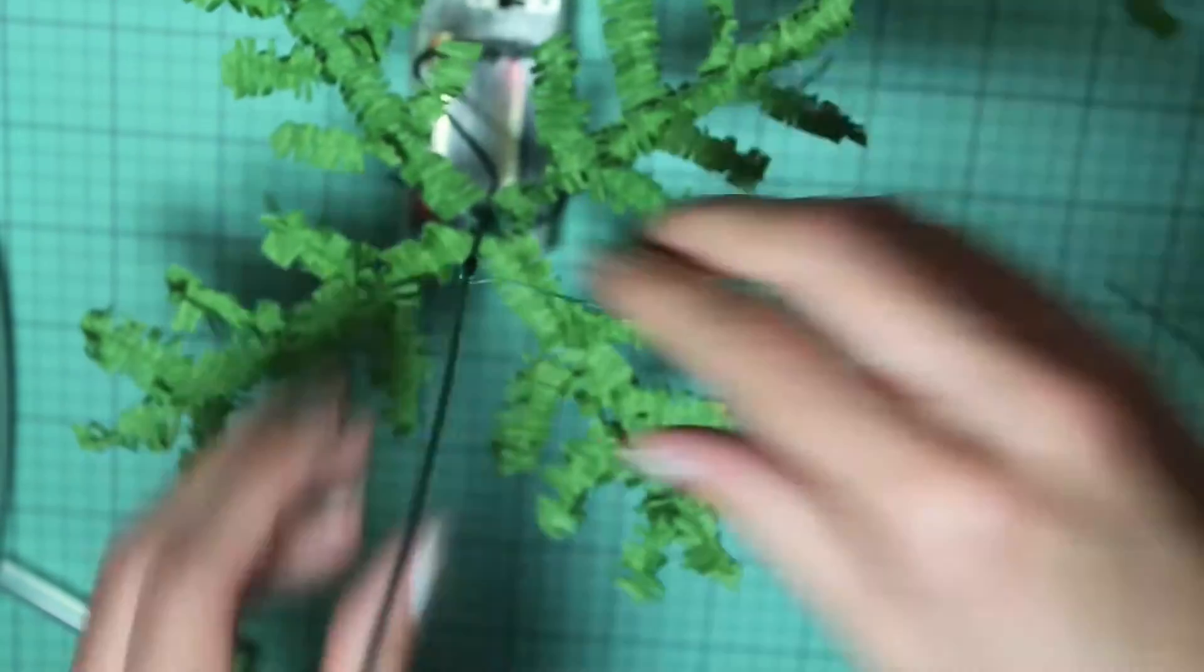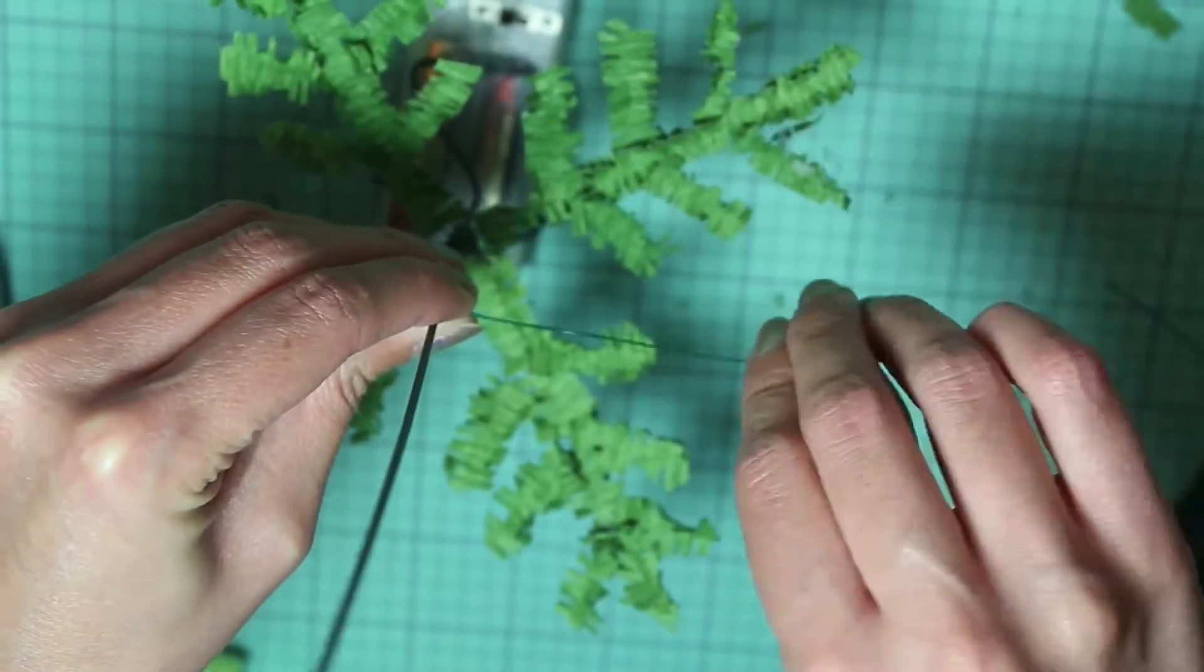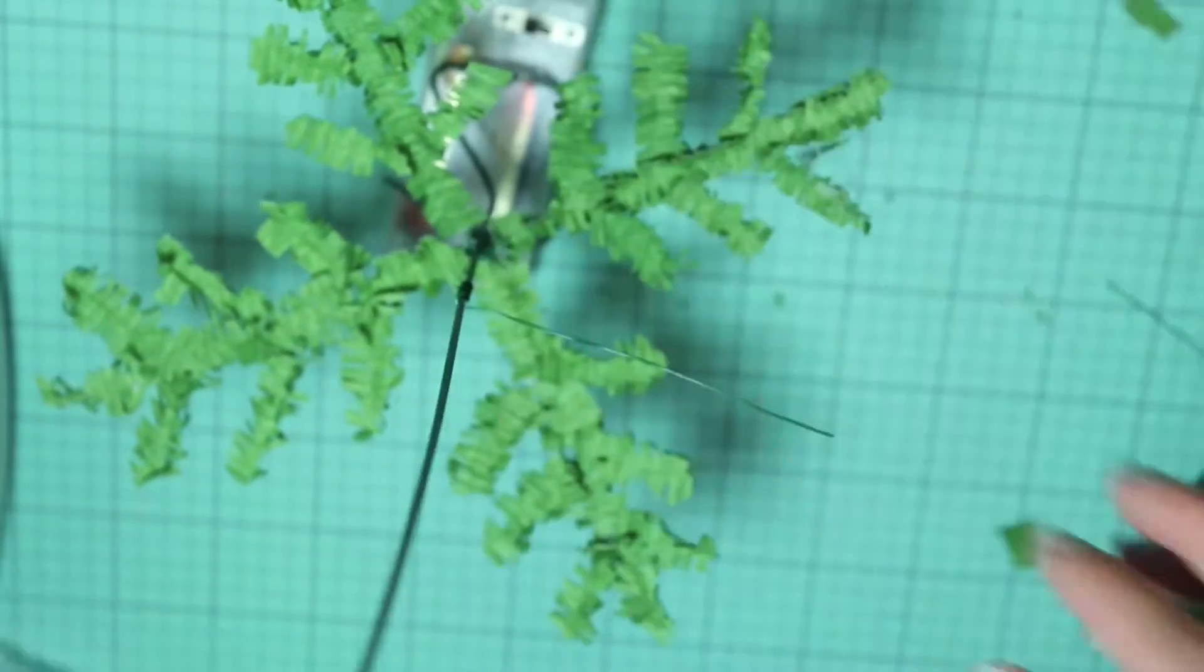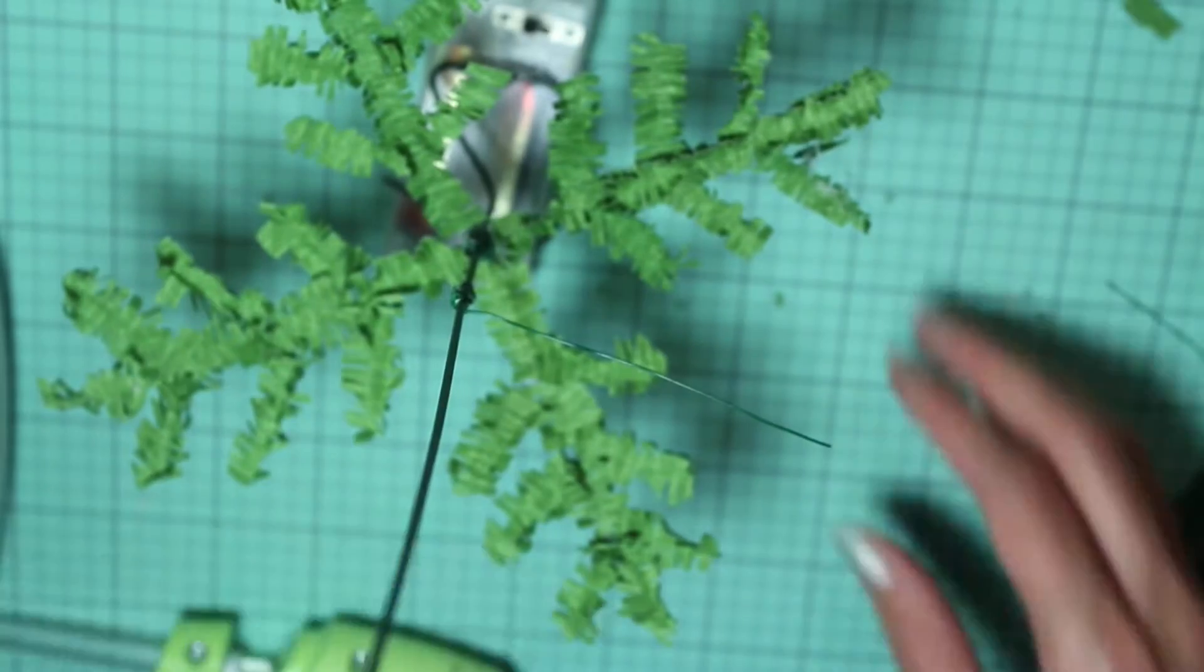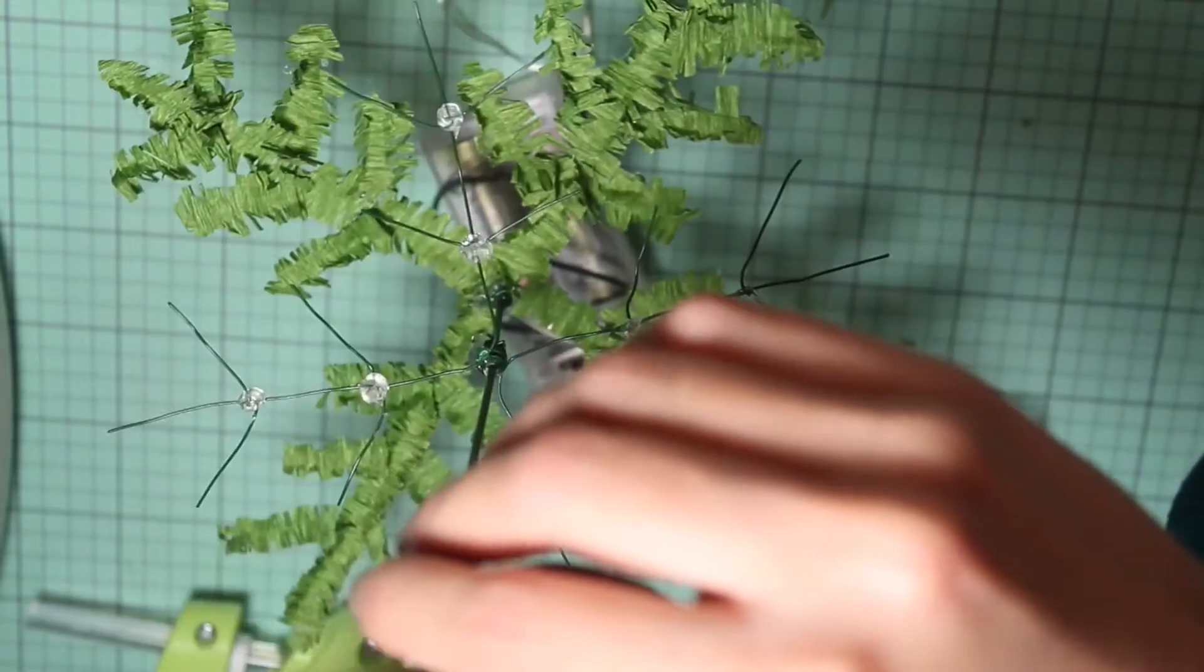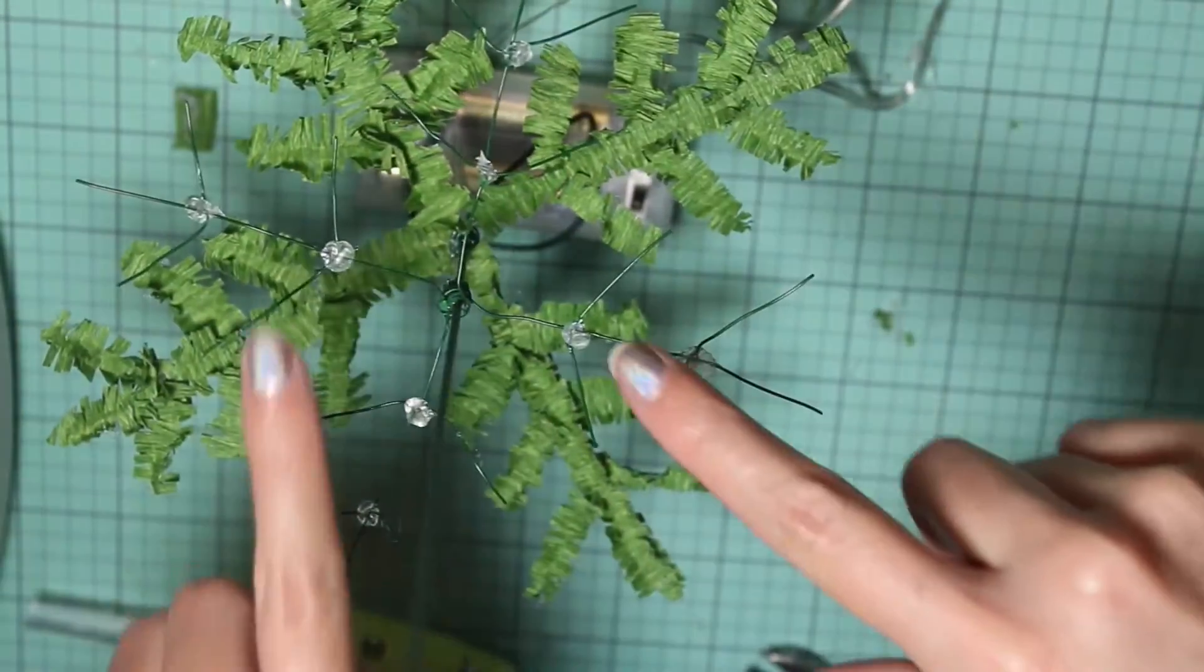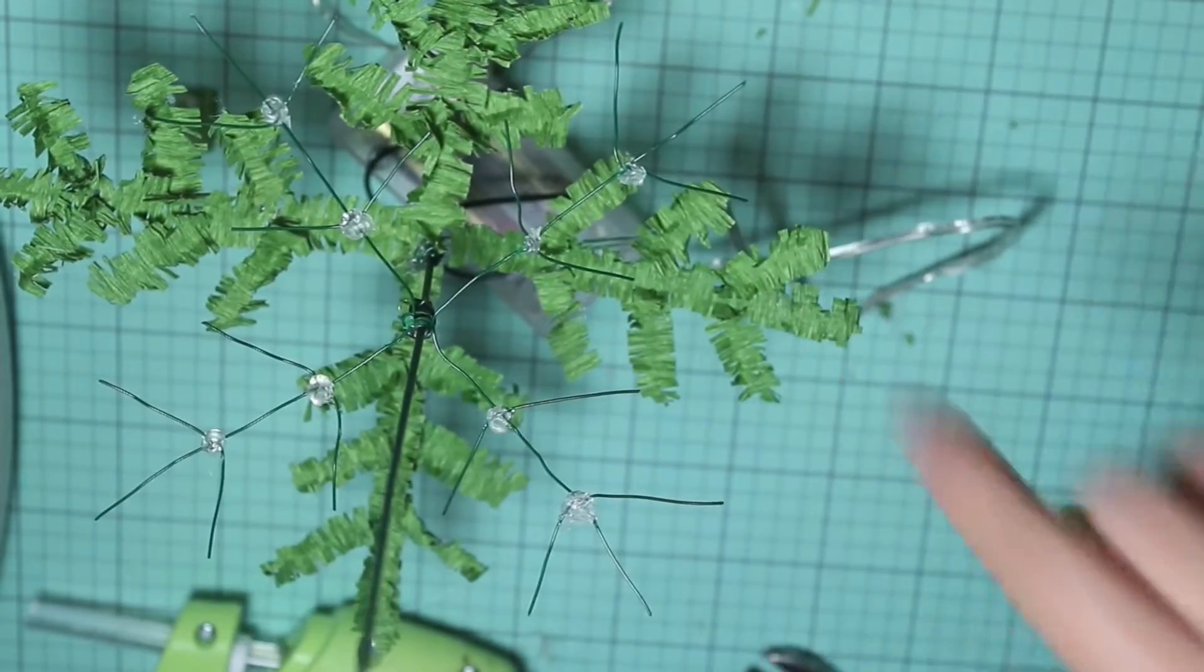This level of branches will need to be shorter than the ones on the first level. Each level will get a little bit shorter, so keep that in mind. Use some hot glue to secure it, and you can spin it around like this before the glue dries. On this branch I'm just gonna do two of those V's instead of three. I repeated this on all four branches.